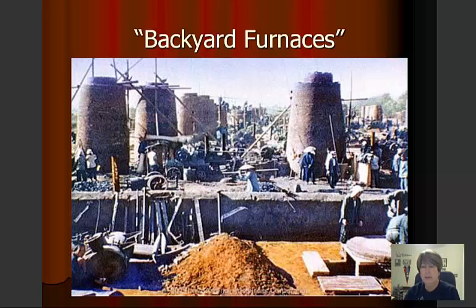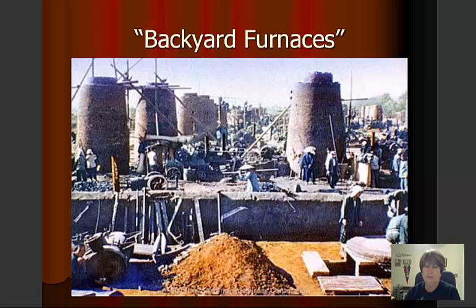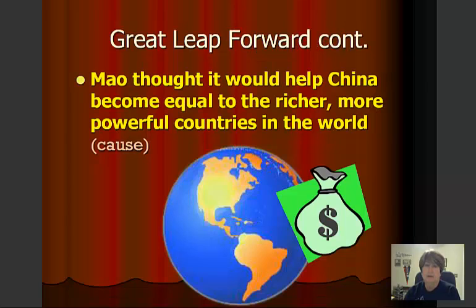This is a picture of the backyard furnaces that were built to try to produce the steel. Unfortunately, the peasants really did not have the process perfected for making steel. They were melting down all of the tools that they had — their forks, spoons, pots, pans, plows, anything made of metal — to try to produce steel. Mao thought that this was going to propel China into becoming one of the richer, more powerful countries in the world.